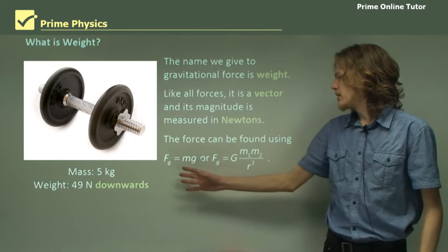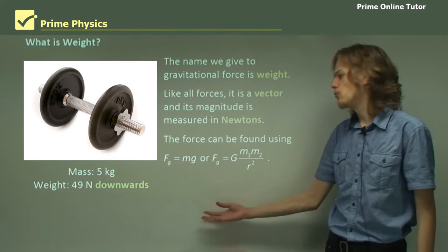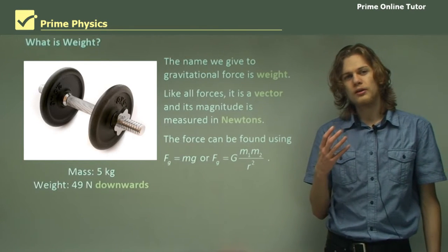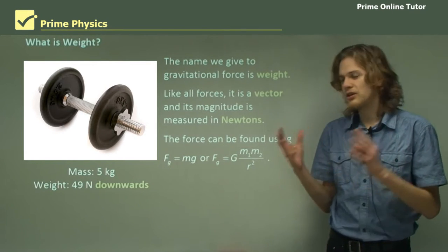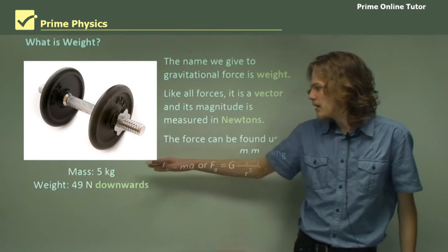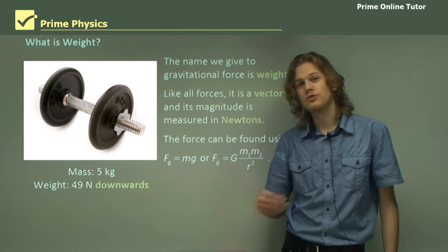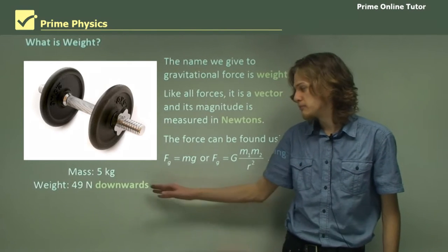The force can be found using f equals mg or fg equals the law of universal gravitation. So the difference between a mass and a weight is that mass is measured in kilograms and weight is measured in newtons because it's a force and it has a direction downwards.